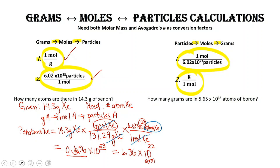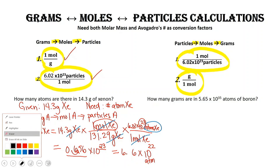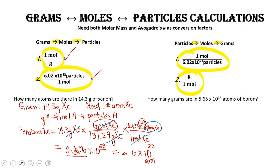Actually, the correct answer should be 6.56 times 10 to the 23 atoms of xenon. Now pause the video, solve the next problem on your own, and I'll come back and give you the answers.